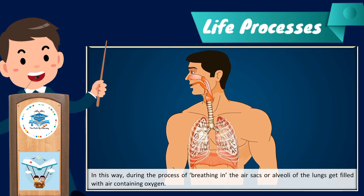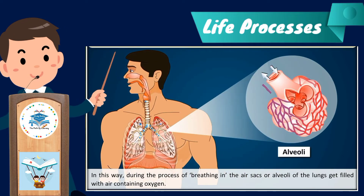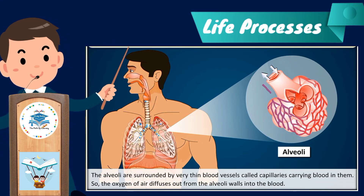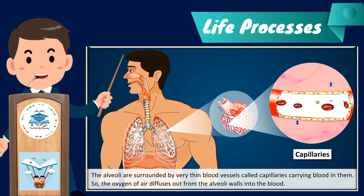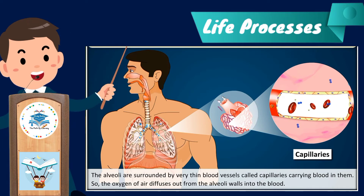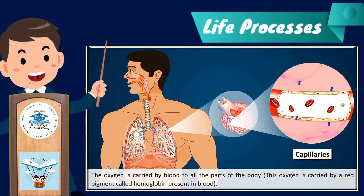During the process of breathing in, the air sacs or alveoli of the lungs get filled with air containing oxygen. The alveoli are surrounded by very thin blood vessels called capillaries. The oxygen of the air diffuses out from the alveoli walls into the blood.